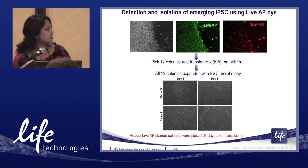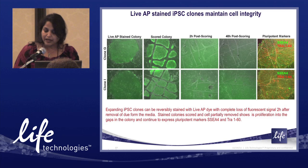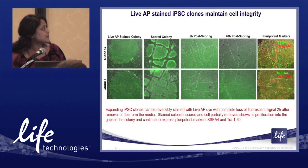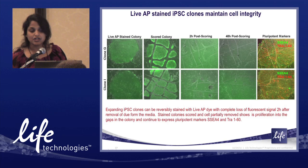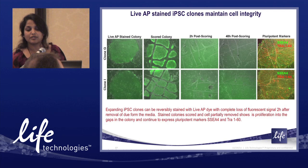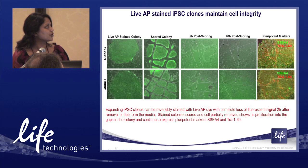Two representative clones are shown at day three and day five, demonstrating colony proliferation and expansion. To demonstrate that live AP does not alter cell integrity or proliferation rate, colonies were mechanically scored with a needle while still green. The dye diffuses after two hours and is completely gone by that point. When cells were allowed to recover for 48 hours, the gaps in the colonies grew back, and the cells continued to express pluripotent markers such as SSEA4 and TRA-1-60, demonstrating no impact of live AP on growth or pluripotent maintenance.